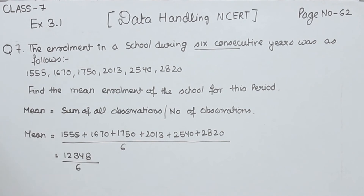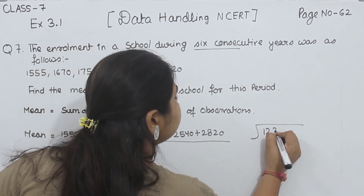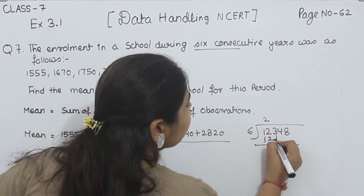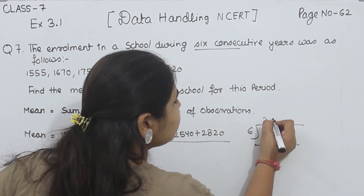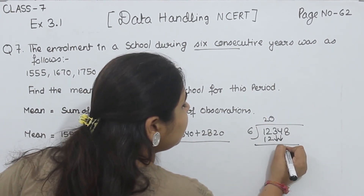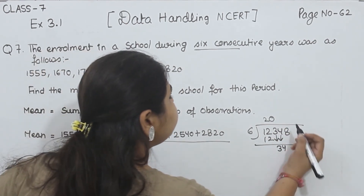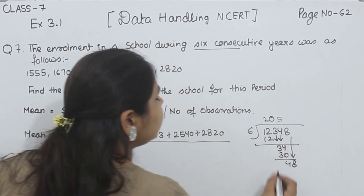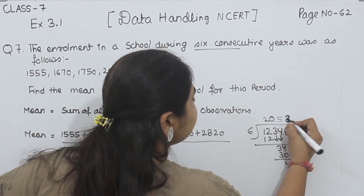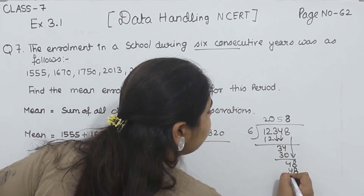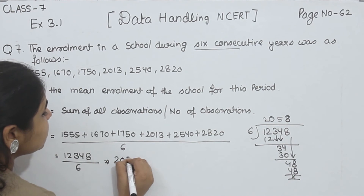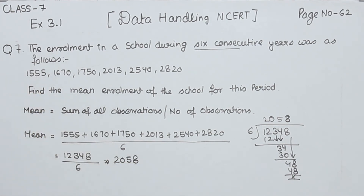Now we are going to divide 12,348 by 6. 6 into 12 is 2; 3 is smaller than 6 so we put 0 and carry down; 6 fives are 30, remainder 4; 6 eights are 48. So when we divide, we get 2058. The mean enrollment of the school for this period is 2058.